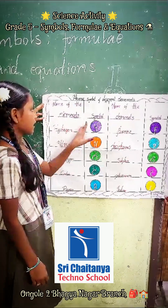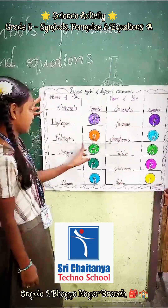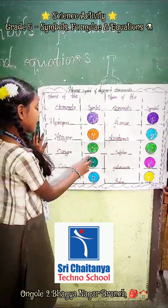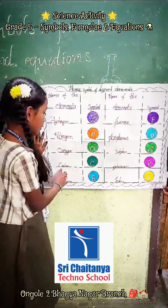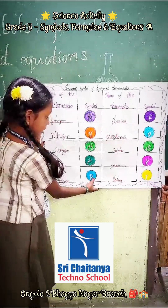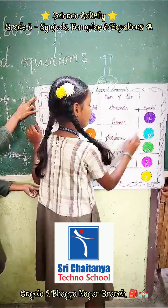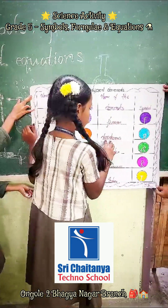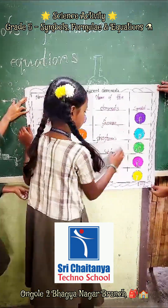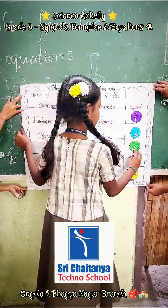Name of the elements: Hydrogen, nitrogen, and oxygen — O. Carbon — C. Chlorine — B. Chlorine — F. Phosphorus — P.